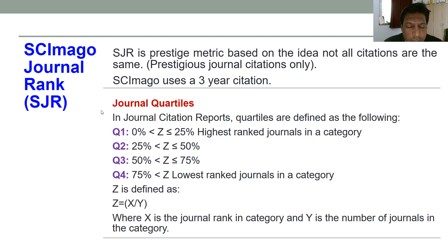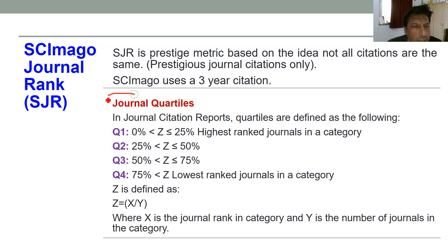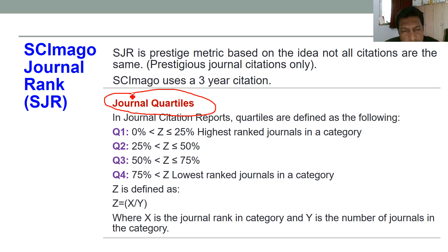This covers impact factor calculation in three different ways. Now, one more important parameter for the quality of a journal is the journal quartile. Many times in reputed universities or institutes, research guides ask scholars to publish papers in Q1 or Q2 category journals. So what are these Q1, Q2, Q3, and Q4 categories? These are actually called quartiles.